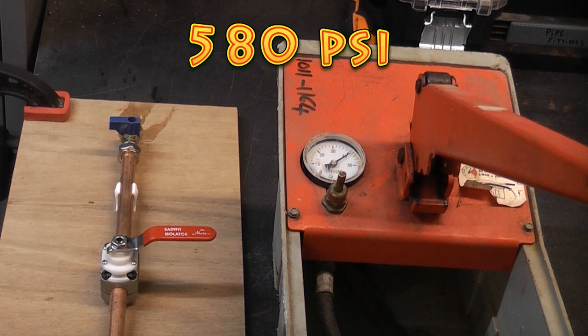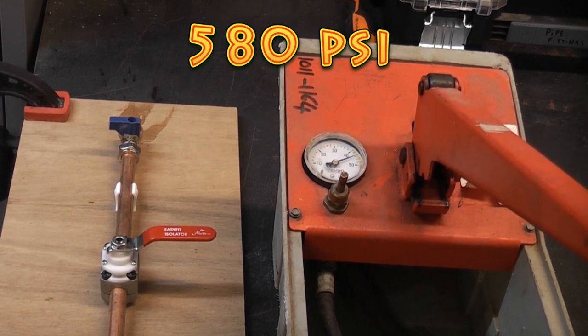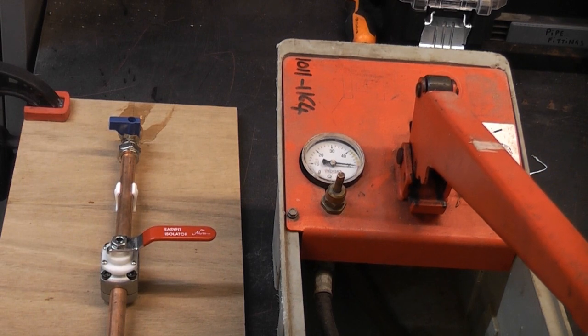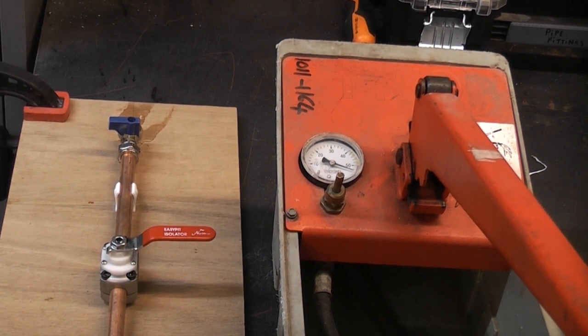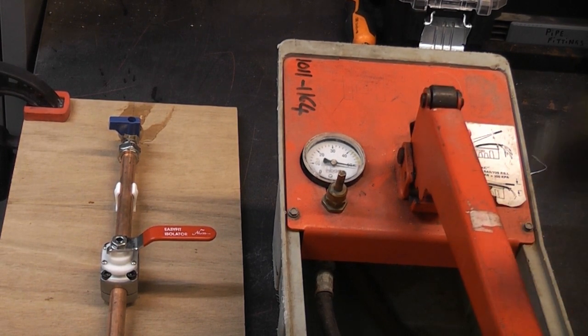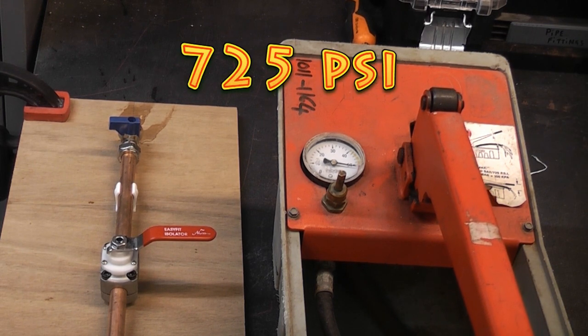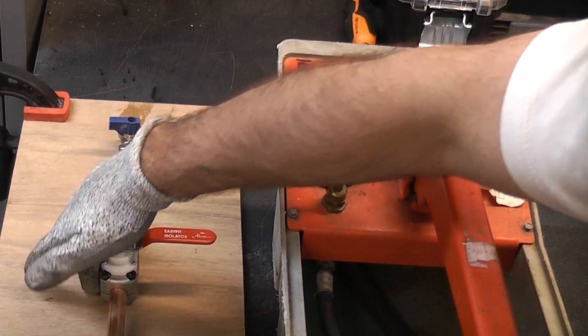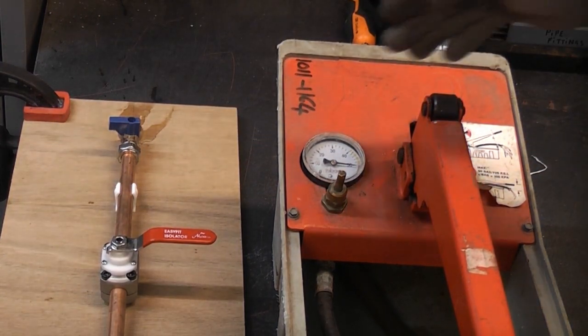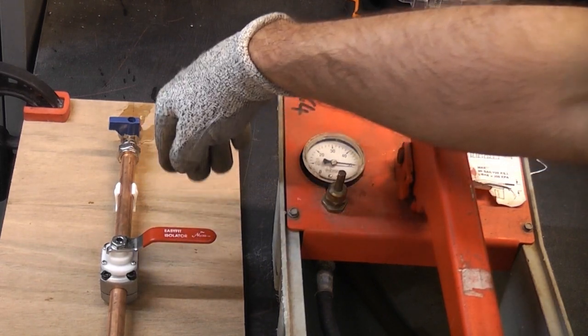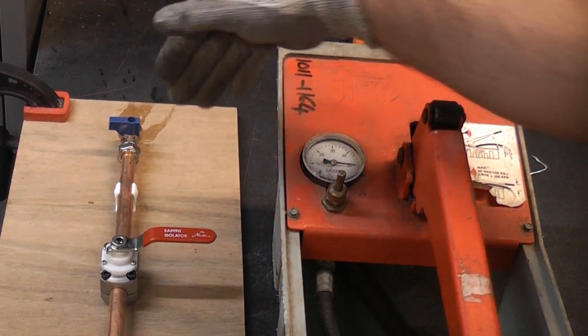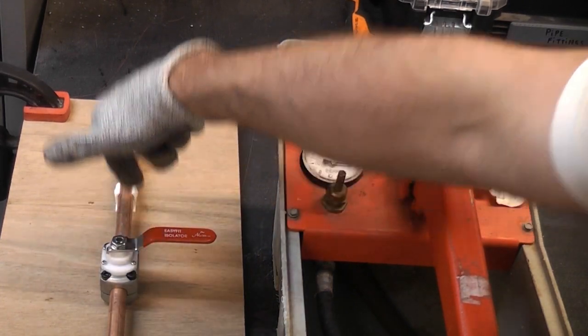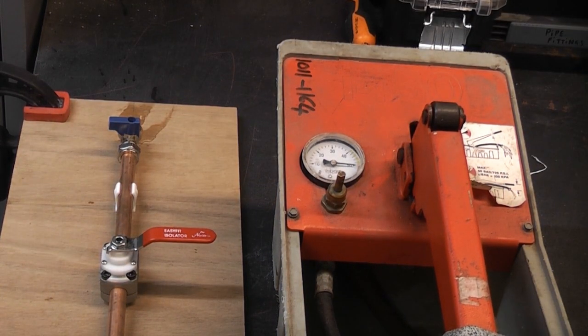And we're now at over 40 bar. You can see that that is not leaking at all. And we're now at over 50 bar, which is 725 PSI. You can see that the fitting itself is absolutely dry as anything. So it can hold approximately 28 bar of pressure before it starts passing, but the actual fitting itself will not leak even when you get to over 50 bar.